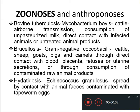Now we will go to the examples of zoonosis. The first one is bovine tuberculosis, which is caused by the bacterium Mycobacterium bovis, and that is usually transmitted from cattle through airborne transmission, consumption of unpasteurized milk, or direct contact with infected cattle or untreated animal products.